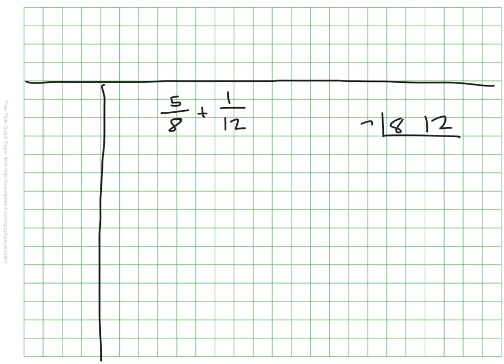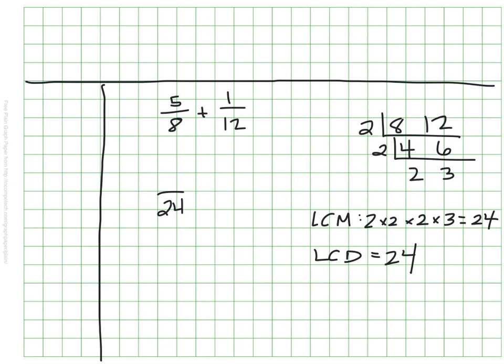These, of course, can both be divided by 2. And then I think I can keep going. I can divide by 2 once more. From here, I know that my least common multiple, of course, is 2 times 2 times 2 times 3, which is 24, which also means my least common denominator is 24. So over here with my fractions, I'm going to rewrite both of them using a denominator of 24.